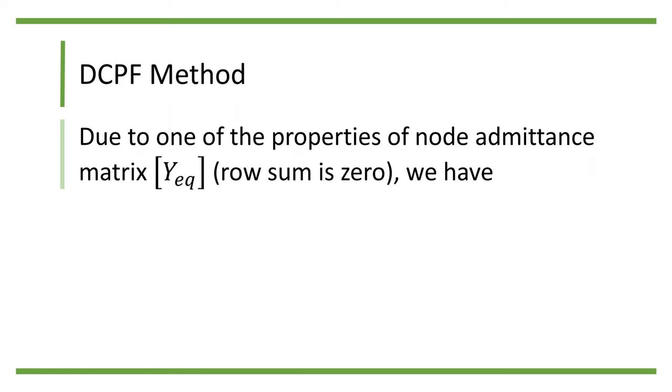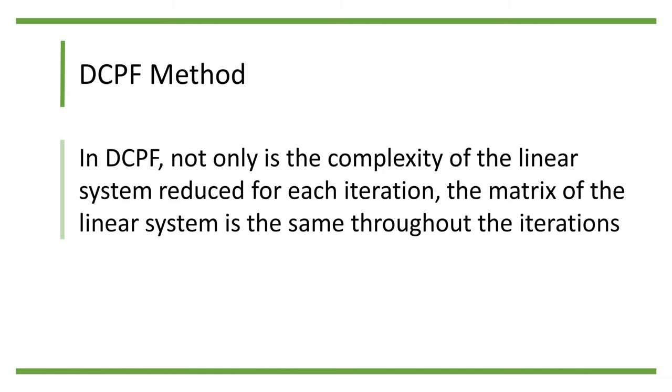Due to one of the properties of node admittance matrix Yeq, that is, the row sum is 0, we have partial Pi partial theta k and partial Qi partial uk both approach y bar ik. So in DCPF, not only is the complexity of the linear system reduced for each iteration, the matrix of the linear system is the same throughout the iterations.